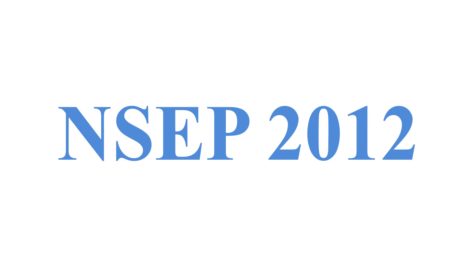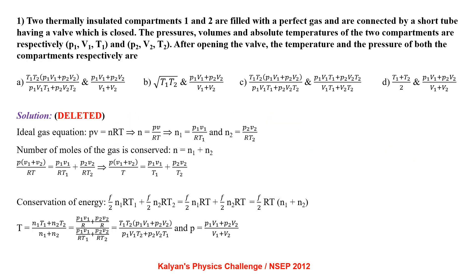Hello everyone, welcome to National Standard Examination in Physics 2012. Two thermally insulated compartments 1 and 2 are filled with a perfect gas and are connected by a short tube having a valve which is closed. The pressures, volumes and absolute temperatures of the two compartments are respectively P1 V1 T1 and P2 V2 T2. After opening the valve, the temperature and the pressure of both the compartments respectively are.